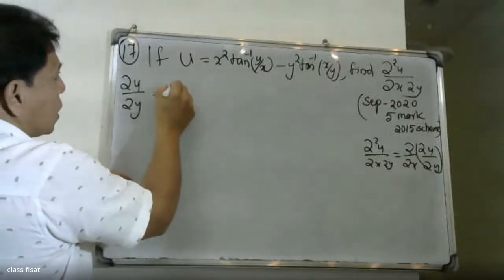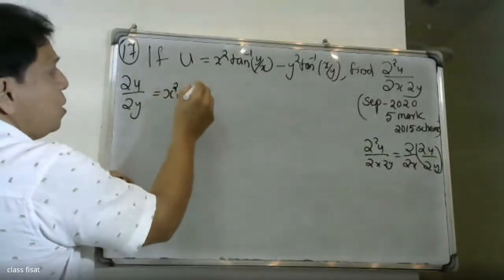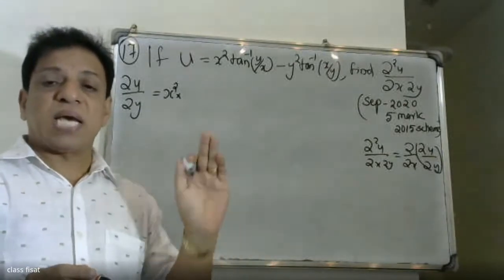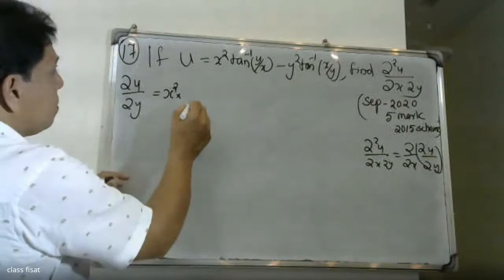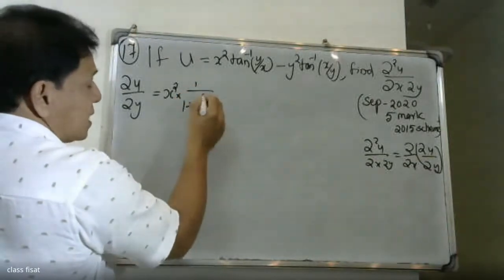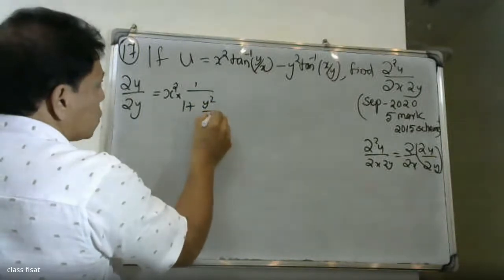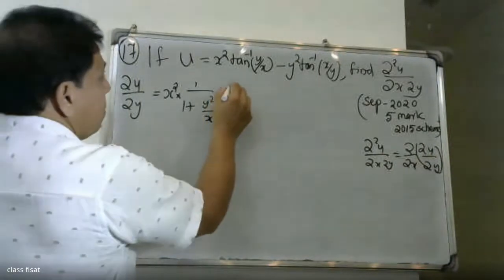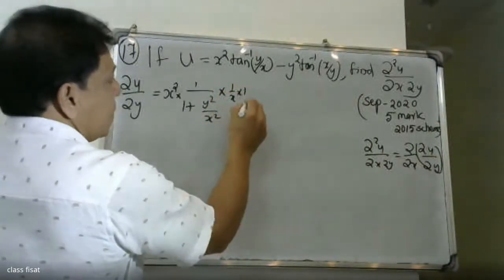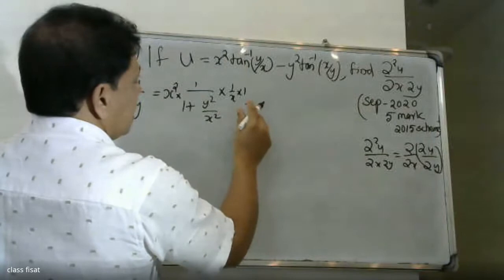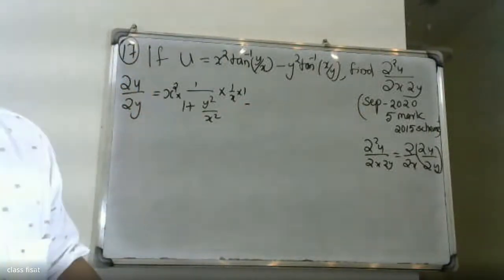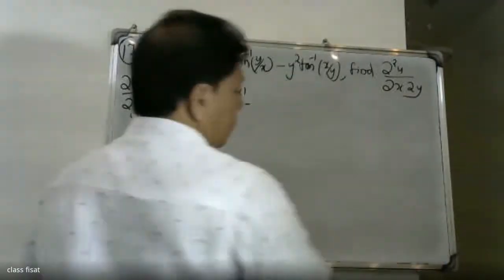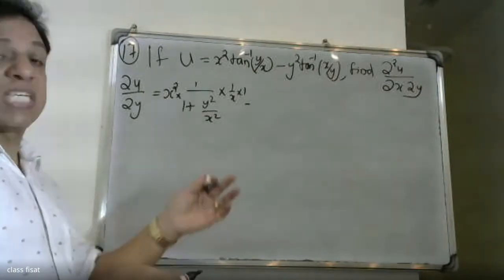Keep x square constant. So x square into tan inverse y by x, we differentiate with respect to y. That gives x square into 1 by 1 plus y square by x square, times 1 by x. This simplifies using 1 by x into 1. Then we handle the second term: minus y square tan inverse x by y.